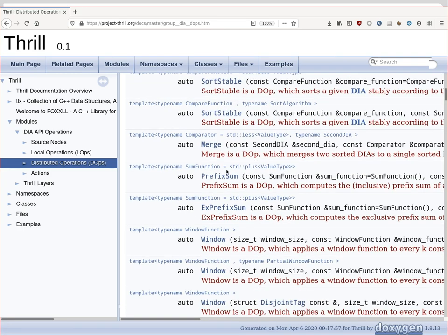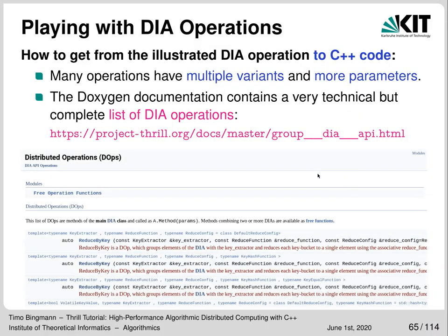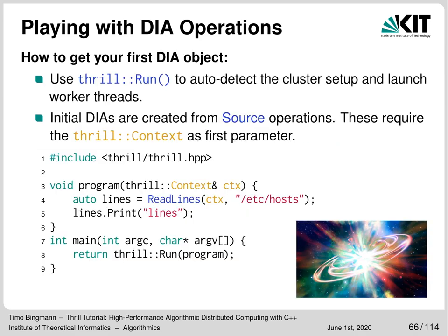There are multiple different variants of all the different functions. I believe the first thing to do is to try and guess, because the illustrated documentation is pretty close to what you need in C++. To get your first DIA object, you need to know that initial DIAs are created from source operations, and these source operations take the context as first parameter — if no parameter of an operation is a DIA, then the context must be passed as first parameter.